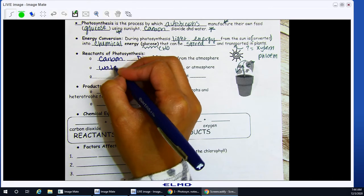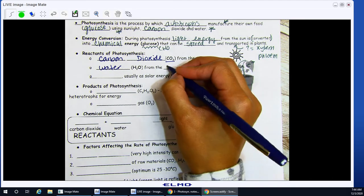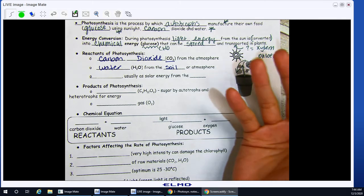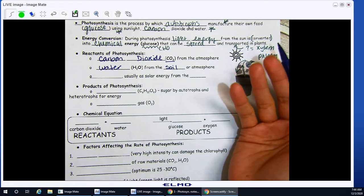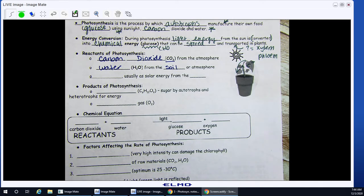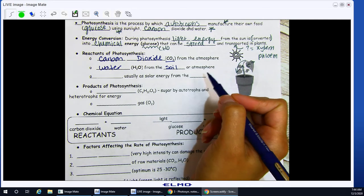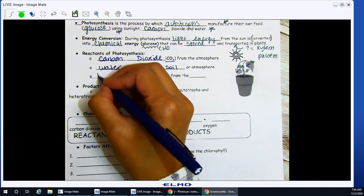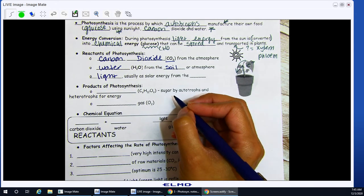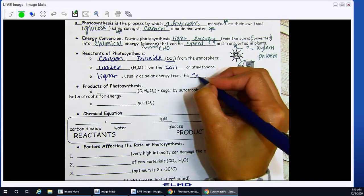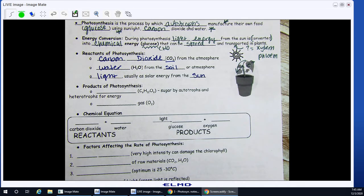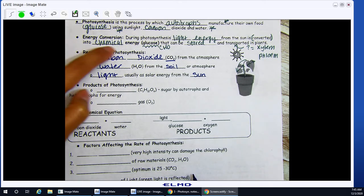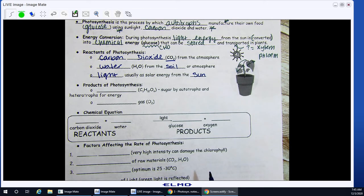H2O is water. And you're going to get this from either the soil or again, your atmosphere. Because depending especially on where you are on your geographical location-wise, how much moisture is generally in your area. And then light. You can have solar energy from, you guessed it, the sun. So all three of these are your reactants. I must have all three in order for me to do photosynthesis.